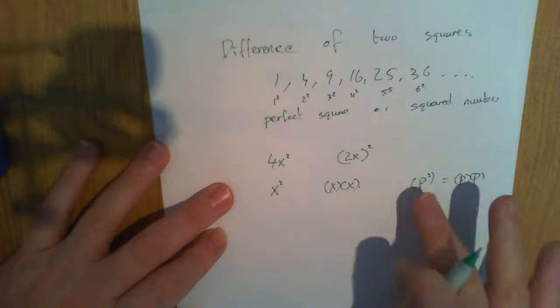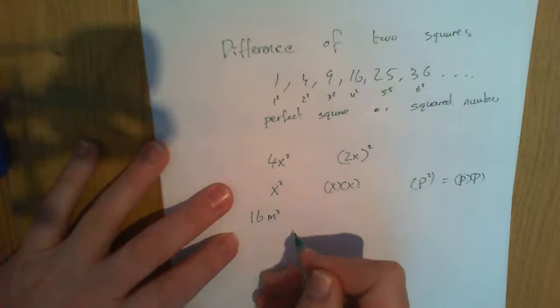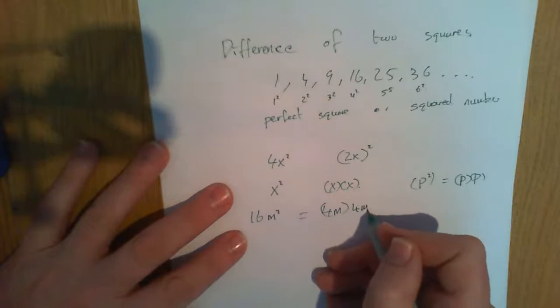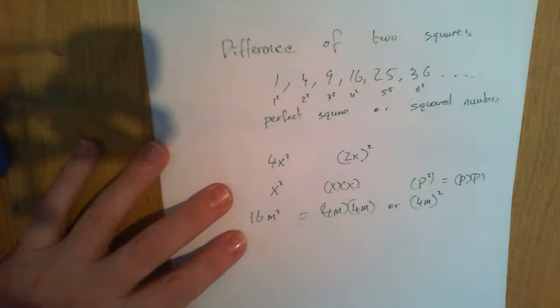So something like 16m squared is actually, what's the square root of 16? It's 4. What's the square root of m squared? It's just a single m. So it's 4m multiplied by 4m, or 4m all squared.